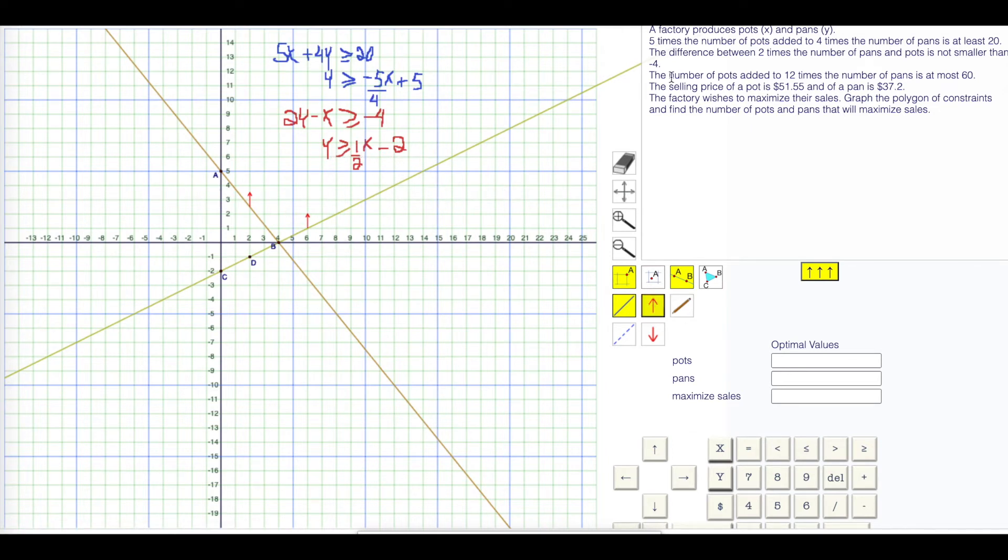The next one, the number of pots added to 12 times the number of pans is at most 60. Pots is x. x, the number of pots added to 12 times the number of pans, that's 12y, is at most 60. It's going to be less than or equal to 60. Then I want to get the y alone. y is less than or equal to, that should be negative 1/12. Instead of positive 12, it's negative 12.